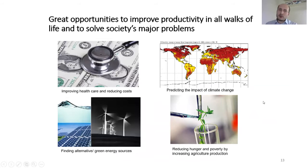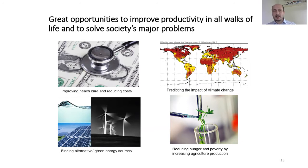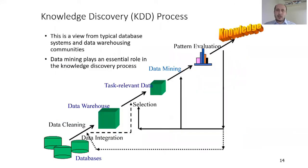We have great opportunities to improve productivity in all walks of life and to solve society's major problems — like improving healthcare and reducing costs, predicting the impact of climate change, finding alternative green energy sources, and reducing hunger and poverty by increasing agricultural production. To do that, we follow the steps known as the knowledge discovery process, or KDD.